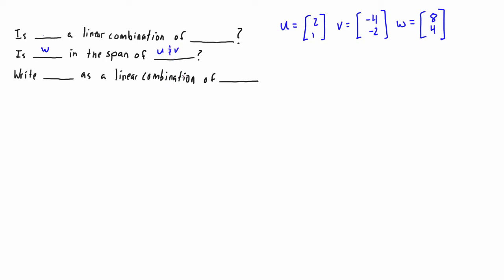The span of a set of vectors is just the set of all linear combinations of those vectors. So basically what this is saying is: is W a linear combination of U and V? Because the span is the set of all linear combinations, and if W is in the span, then W is one of those linear combinations. So this is exactly the same as last time — we need some expression where we have a scalar times U plus some other scalar times V equal to W. You can write this as C1 and C2, or just X times U plus Y times V — any letters you're comfortable with, since these just represent scalars.